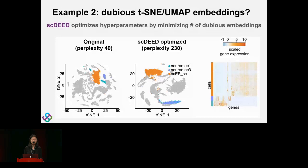A striking result: three small clusters — two blue and one purple — became merged into one big cluster after optimizing perplexity, and they are farther from the orange cluster than in the original study. The orange cluster is epithelial cells, and the three other clusters are neuron cells. This optimized embedding is more consistent with the gene expression heatmap, which shows the three clusters are not so different from each other but much more different from the orange cluster. This is one example of what scDEED can help optimize; the preprint has more results about UMAP embedding.